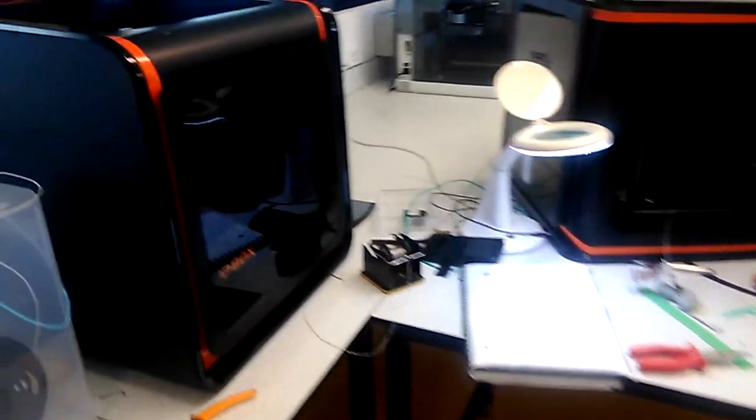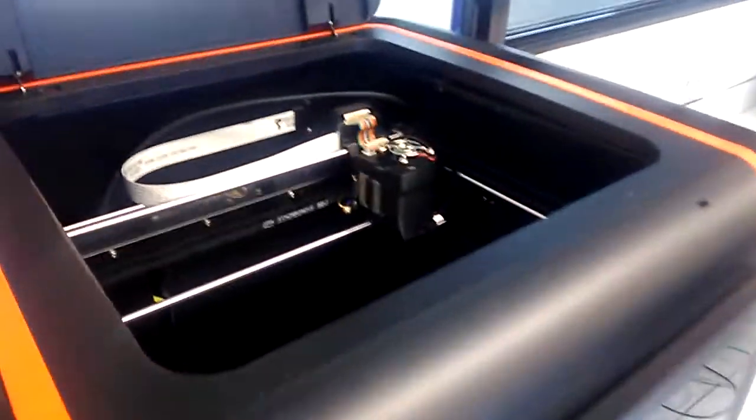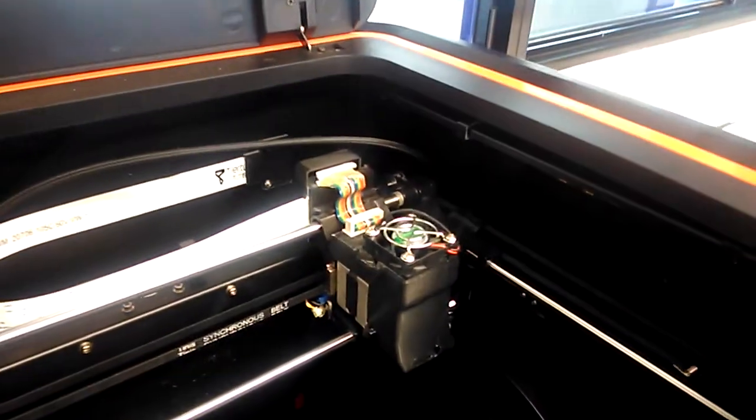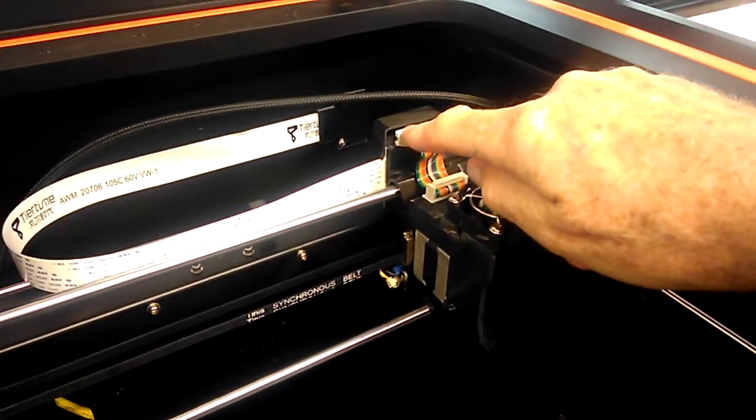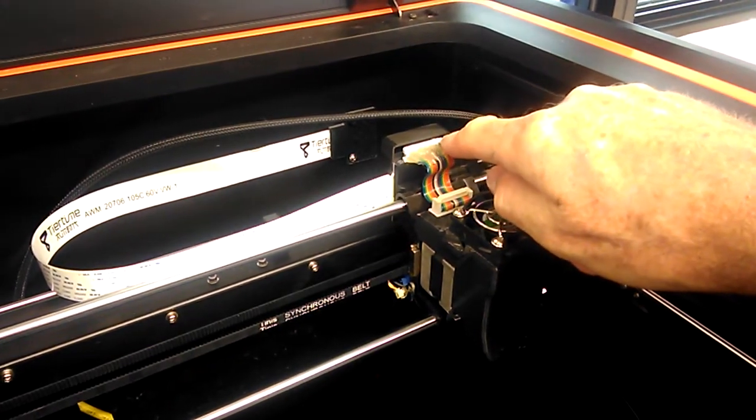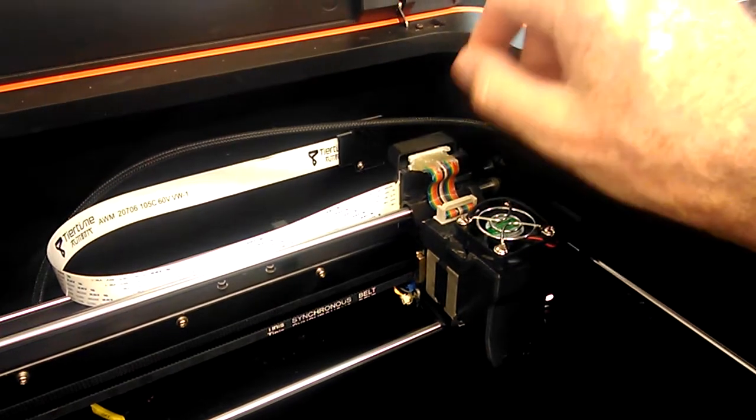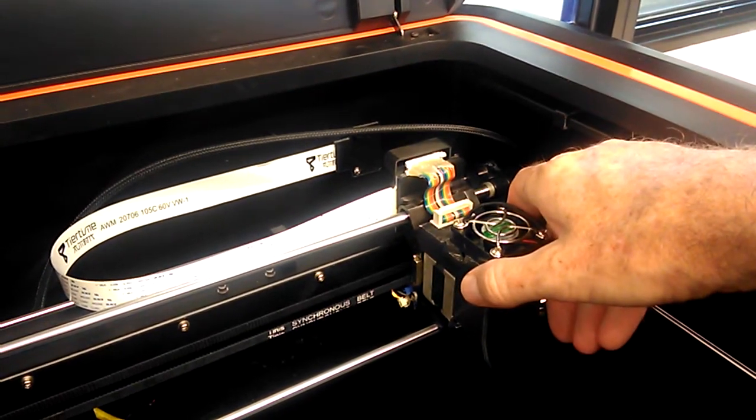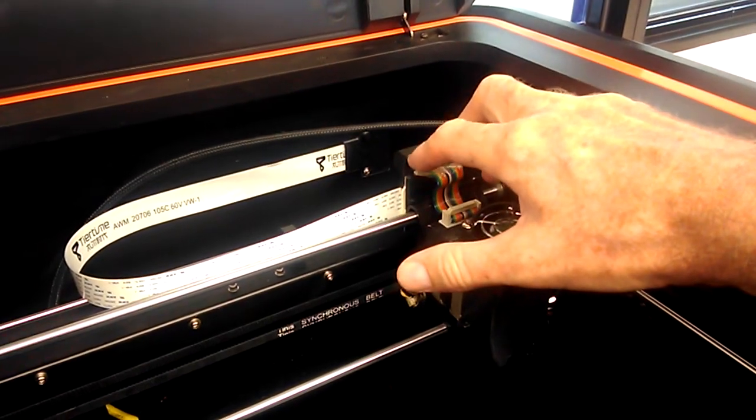So actually the problem was a bad connection. And you can see here basically I've removed that connector and I've soldered the ribbon cable directly onto that header. You can still unplug and remove this easily enough and this card can be removed as well.